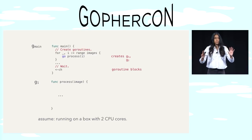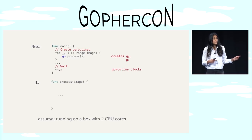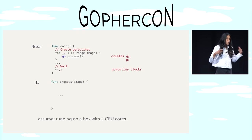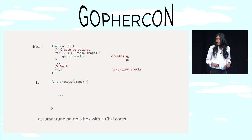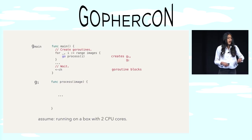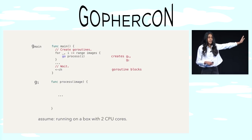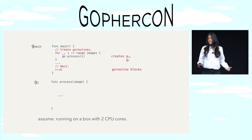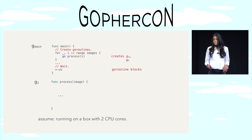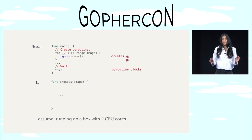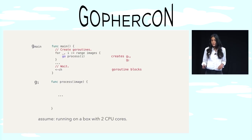Before we start brainstorming ideas to answer those two questions, we need a way to test them out, using our example program. G main is going to create Go routines G1 and G2 and then it's going to block on that channel. We're also going to assume that we're running on a machine with two CPU cores.